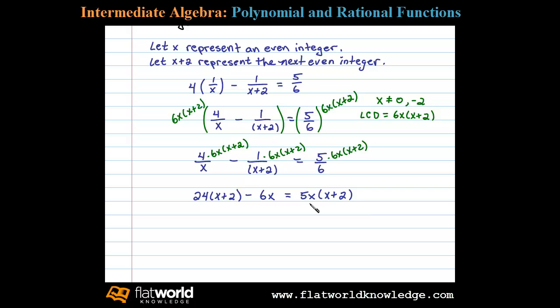Let's distribute and get this in standard form equal to zero. So here we have 24x + 48 minus 6x.